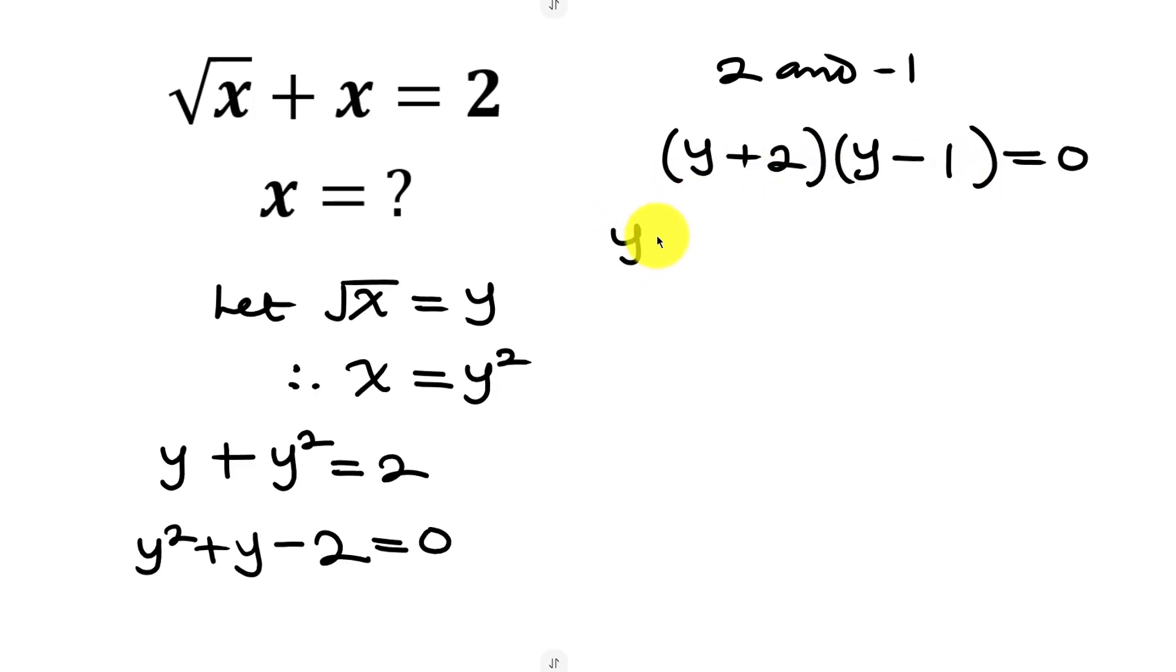We have two cases: y + 2 = 0, or y - 1 = 0. For the first case, moving 2 to the right hand side, y = -2.